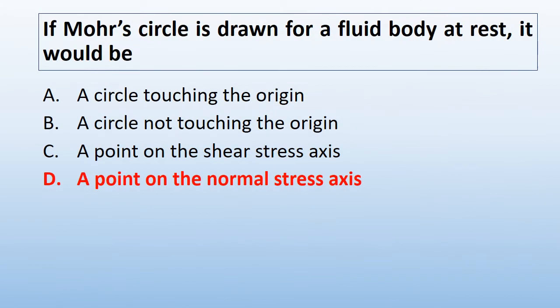If a Mohr's circle is drawn for a fluid body at rest, it would be a point on the normal stress axis.